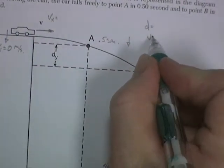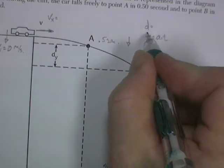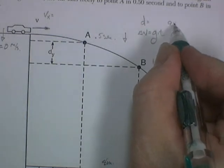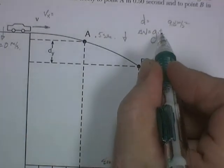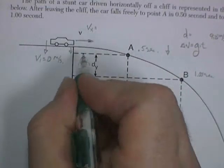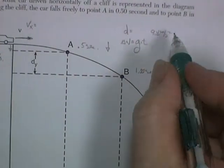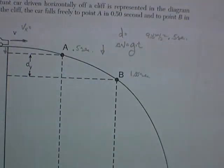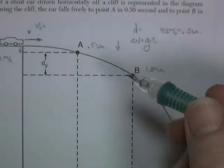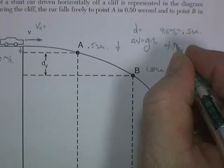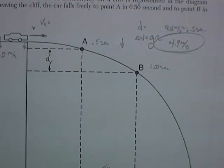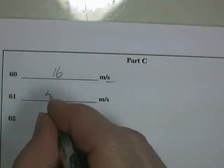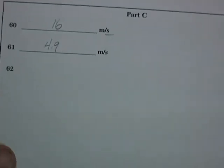The velocity is going to be acceleration times time. So the change in velocity is acceleration times time, and the acceleration is going to be a result of gravity, so it's going to be 9.8 meters per second squared. And the time is going to be half a second. So it's falling for half a second, how fast is it going? Well, that's going to be 9.8 meters per second squared times 0.5 seconds, so it's going to be half of 9.8. So its velocity at A will be 4.9 meters per second. So 4.9 meters per second.